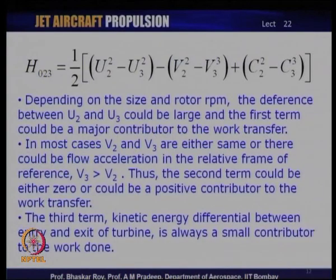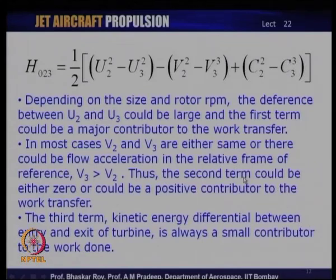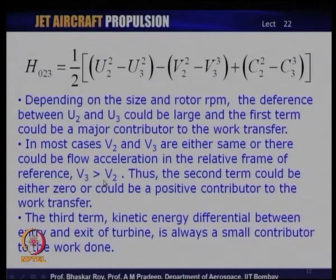This is what makes a radial turbine a better work extractor intrinsically than an axial turbine working under the same operating conditions. The work extraction capability depends on rotor size and rpm. The difference between U2 and U3 can be manipulated during design to ensure maximum work extraction from the first term. The second term depends on how much reaction is rendered through the rotor via the vane shape, ensuring V3 is higher than V2, and the third term can by design also make a small contribution.